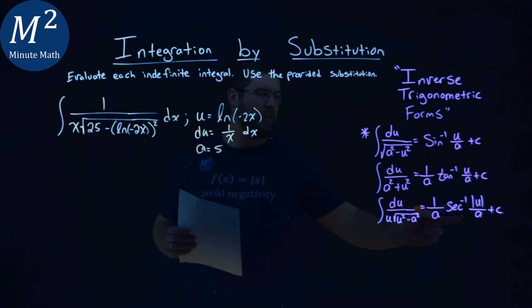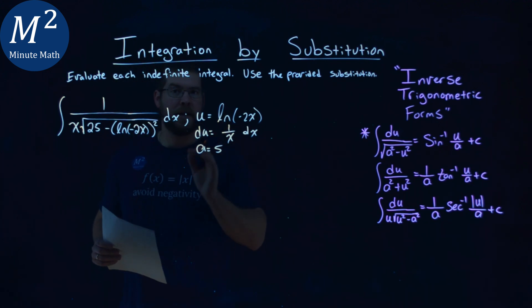At first, you want to say, well, maybe it's the arc secant lining up. But this 1 over x will disappear when we write it in terms of u, because remember, du is 1 over x dx.